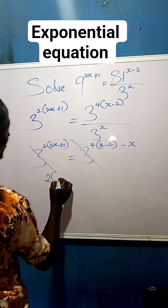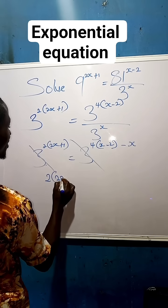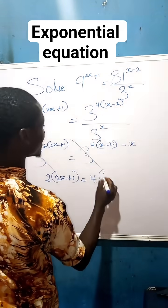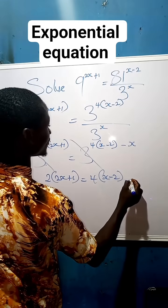We now have 2 times (2x plus 1) equals to 4 times (x minus 2) minus x.